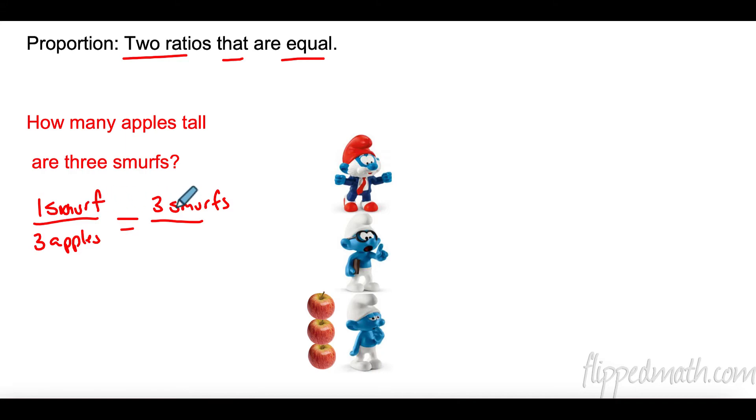I'm putting these both on the top because they're comparing Smurfs to Smurfs. And on the bottom, I don't know how many apples. So, now this is a proportion. One ratio compared to another ratio set equal to each other. That is called a proportion. These are very important.